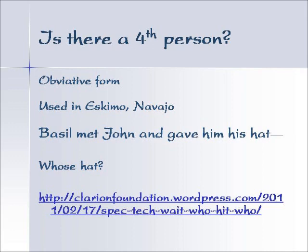We could ask the question if there is a fourth person, and there are some grammars where they postulate a fourth person in some American Indian languages. We have this problem in English — for example, the sentence 'Basil met John and gave him his hat.' Well, who gave what to whom, and whose hat was it? That is not clear in English, and these other languages do have a form that makes it clear. However, they're not really a fourth person — they're still the person we're talking about. If you're interested in reading more about this, here's a website where you can read an article about it.